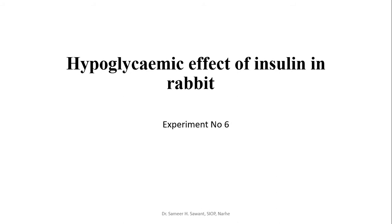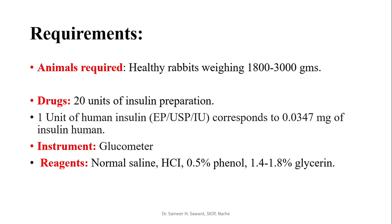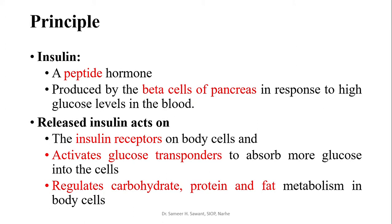Today we will discuss how to determine the hypoglycemic effect of insulin in rabbit. The requirements are: healthy rabbits of weight range 1800 to 3000 grams, drug insulin, a glucometer for estimation of blood glucose level, and reagents: normal saline, hydrochloric acid, 0.5 percent phenol, and 1.4 to 1.8 percent glycerin.